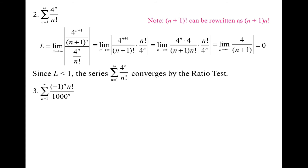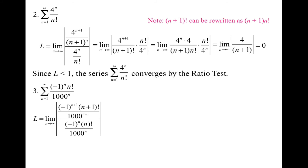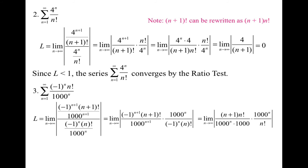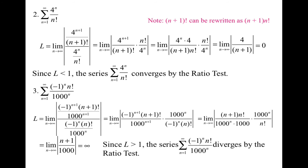Let's try this next example. I take the n+1 term over the nth term, rewrite it as multiplication. I can get rid of the negative 1s because I'm dealing with absolute values, so they're irrelevant. I rewrite (n+1)! as (n+1) times n!, then break up the exponential term using exponent rules. I cancel out the 1000 to the n and the n! terms, leaving me with (n+1) over 1000. When I plug in infinity, I get infinity. Since L is greater than 1, the series diverges by the ratio test.